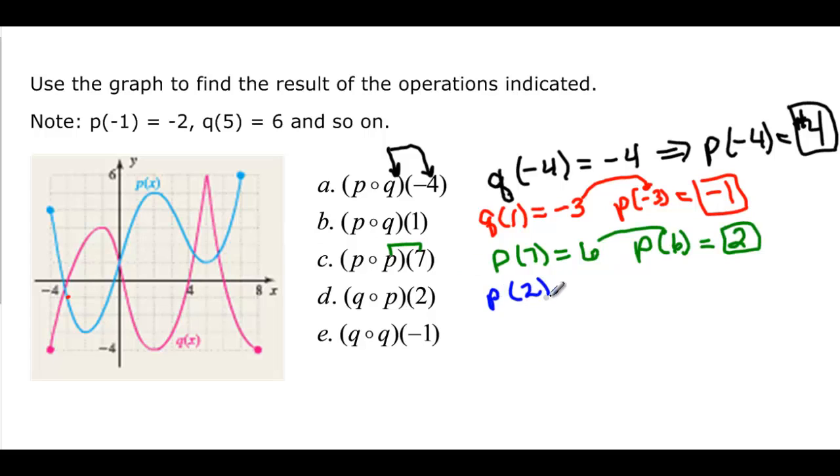p of 2 is going to be, p is the blue, I come to 2 and the x, and I go up to the blue, and it looks like 1, 2, 3, 4, 5. So now I have to do q of 5, because again, remember this number becomes the input of the first function. So I come over to 5, and I look at the q, and it's going to be equal to 6.